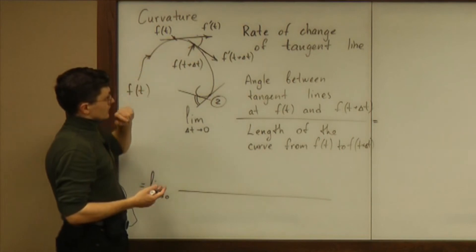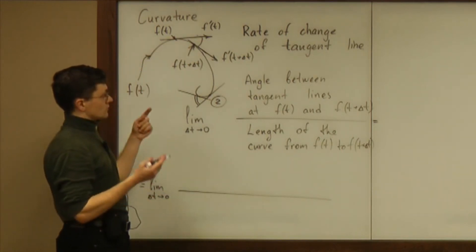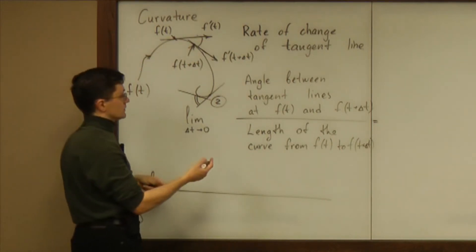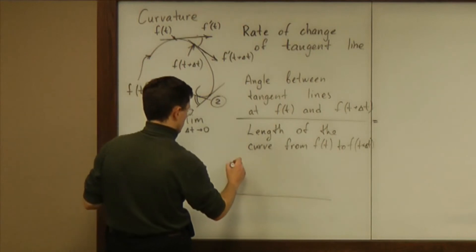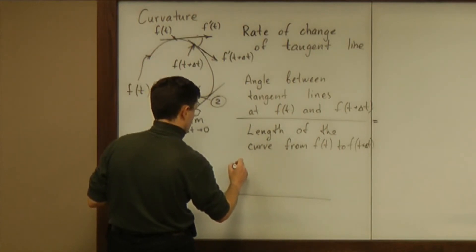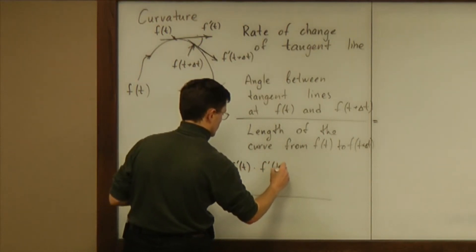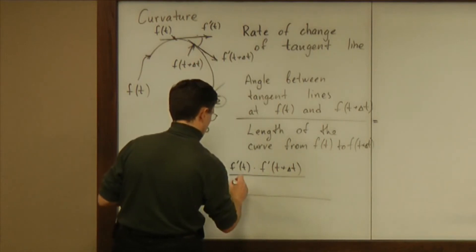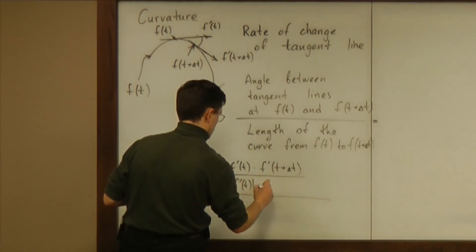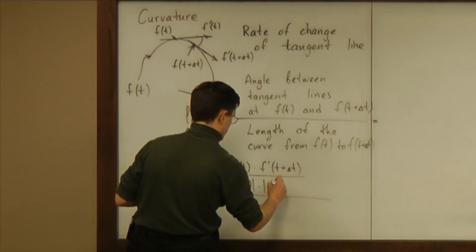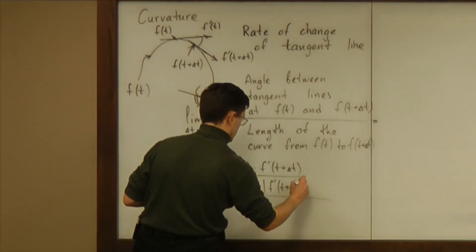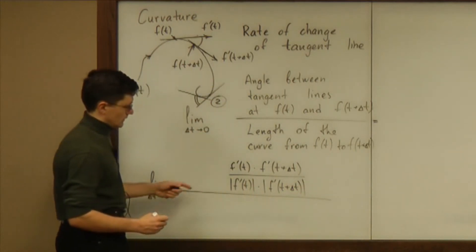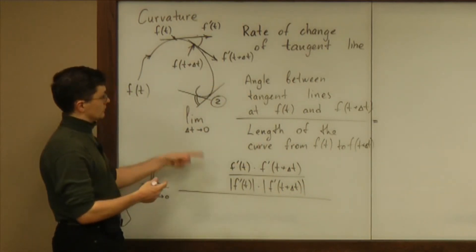And now we can measure the angle between two vectors. What's the way to measure the angle between vectors? We can measure cosine of that angle using dot product. So we can take f prime of t, dot product with f prime of t plus delta t, divide all that by magnitude of f prime of t, also by magnitude of f prime of t plus delta t, and that quantity will be cosine of the angle.